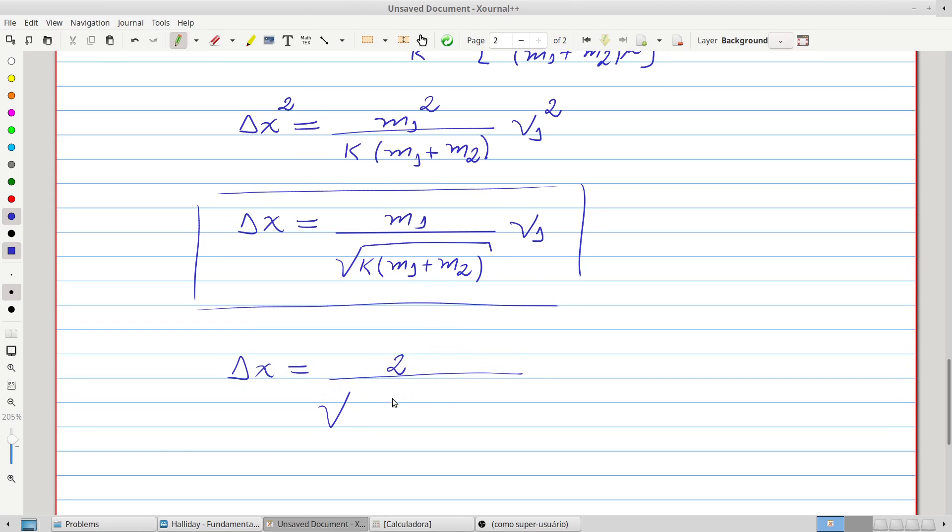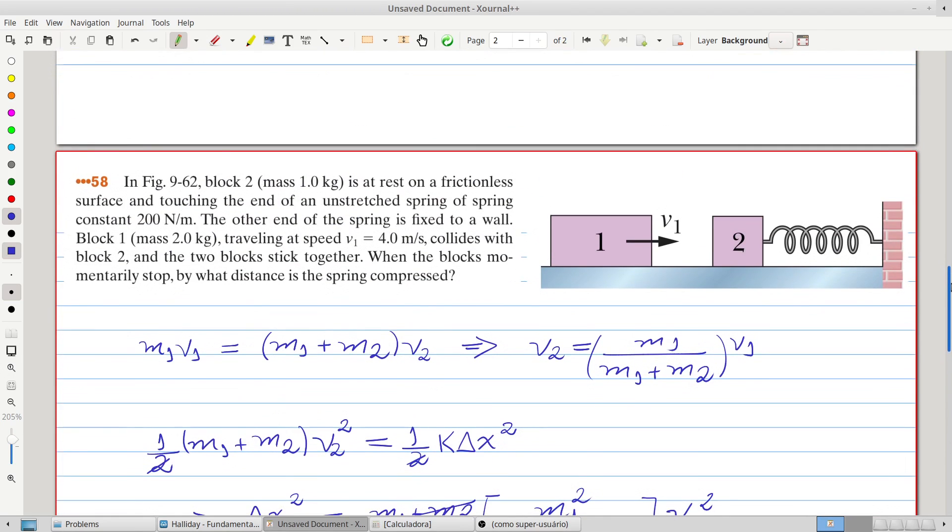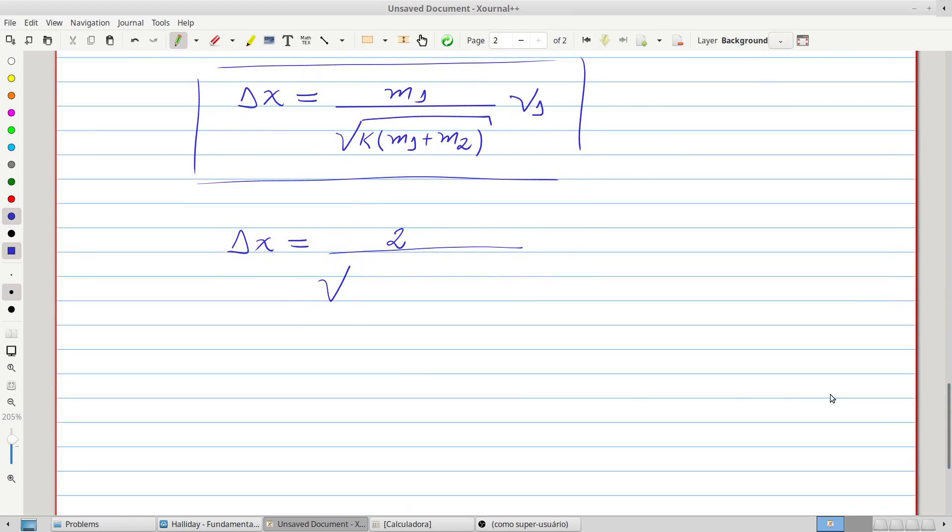the square root of K, divided by M1 plus M2, that is three,